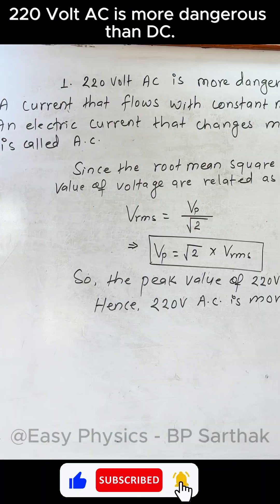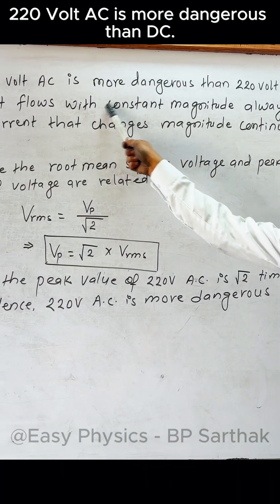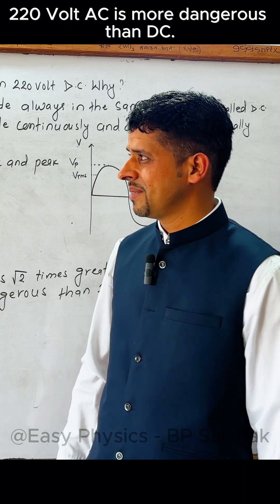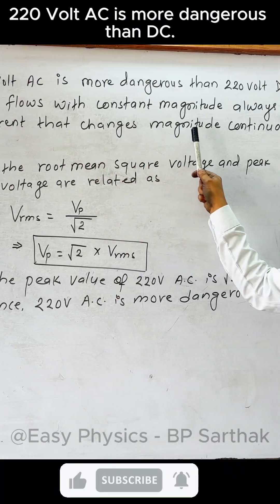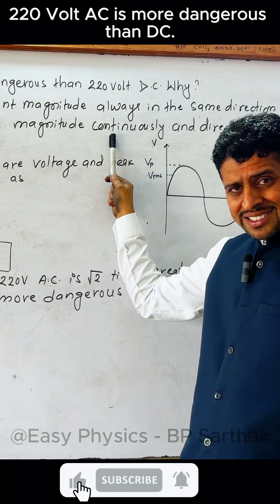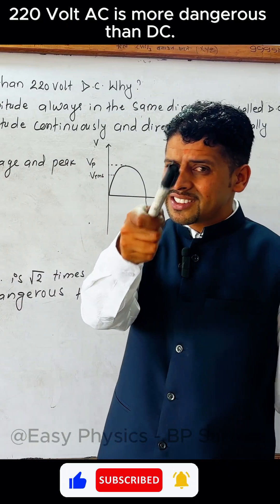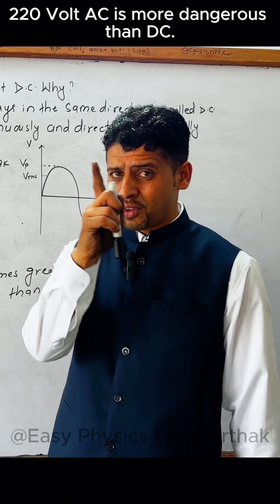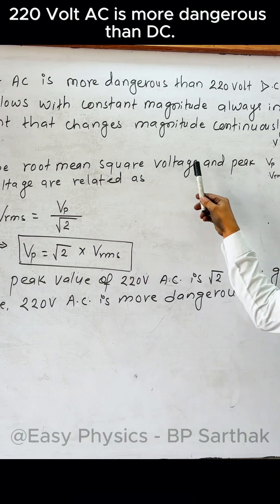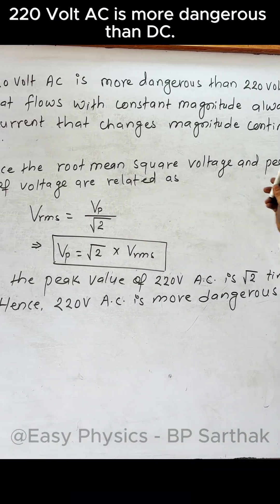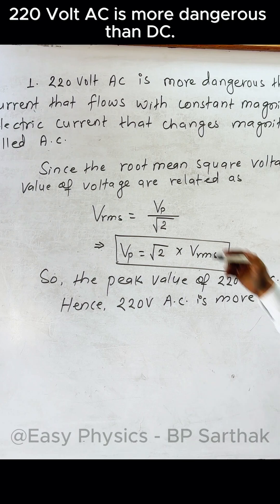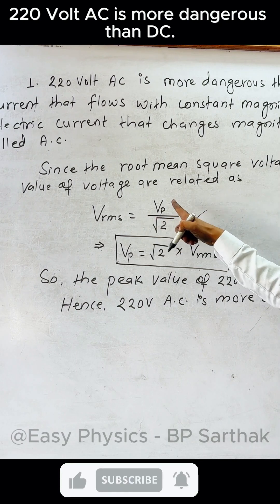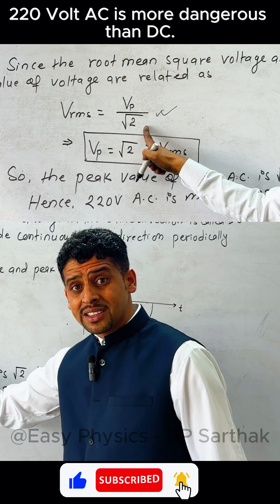A current that flows in the same direction with constant magnitude is called direct current. A current that changes magnitude continuously and direction periodically is called alternating current. In the case of alternating current, the root mean square voltage and peak value of voltage are related as: Vrms = Vpeak / √2.